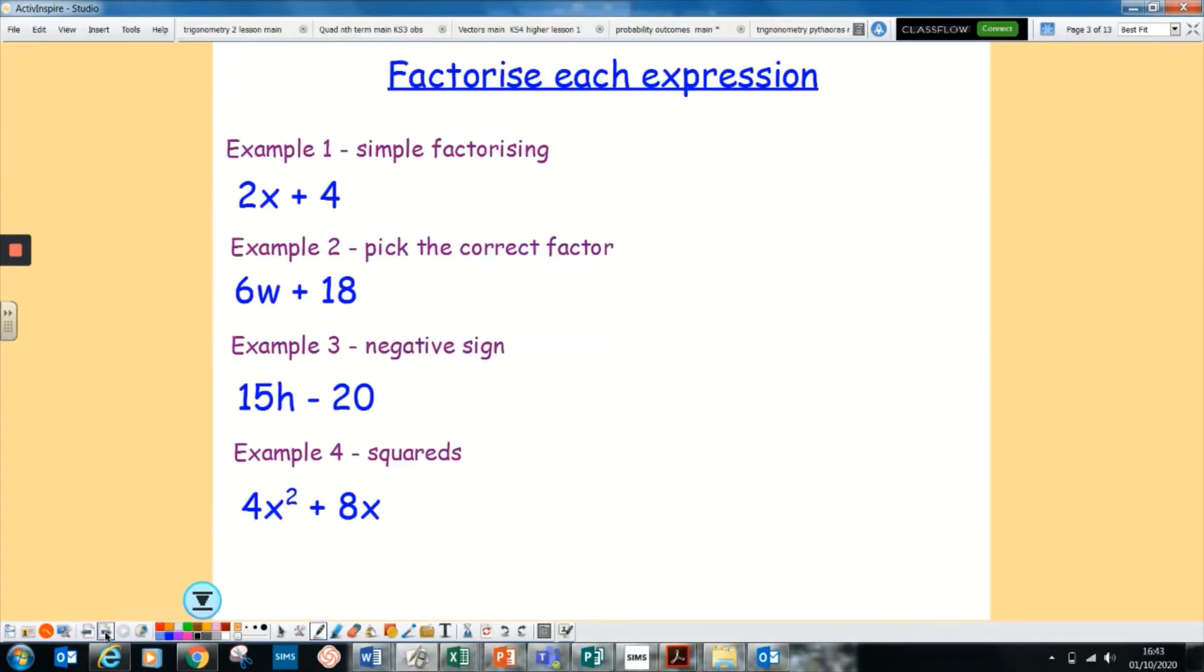So if we have a look at these examples here, this is a nice simple one. We have a look at this expression 2x + 4. If we factorise it, we need to think what's the biggest number that goes into both 2 and 4, which is 2. That's going to go on the outside of your bracket. How do you get from 2 to 2x? It will be an x. 2 times x is 2x, and 2 to a plus 4 is a plus 2.